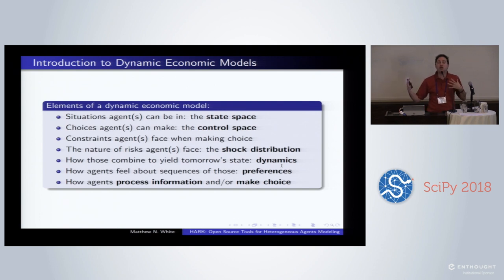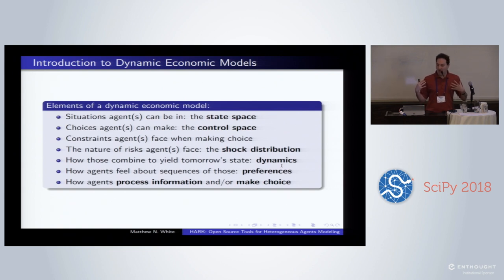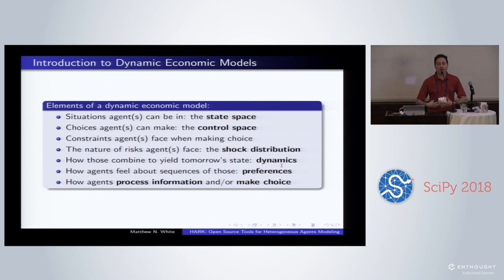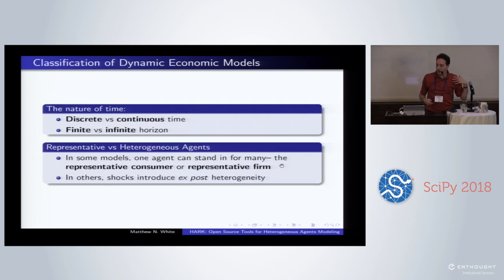In traditional economics, there's always some concept of preferences — how agents feel about sequences of events or streams of experience that could happen to them. More broadly, agents — whether in a traditional economics optimization model or in so-called agent-based modeling — always have some model of how they process information and make choices. In traditional economics, the answer is they optimize on some utility function they're trying to maximize in a dynamic sense. In other models, there could be other decision-making frameworks. But broadly speaking, that is the entire world of economics. For those of you who didn't get your PhD in economics, you basically just got it.